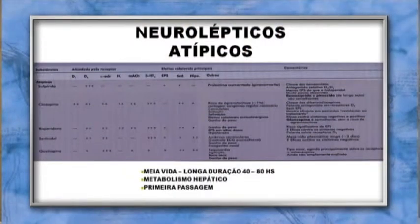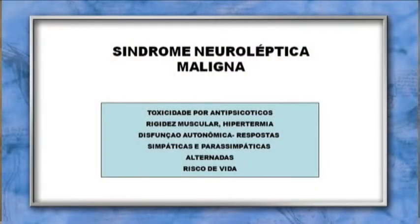Os neurolépticos atípicos (sintéticos) como risperidona e sulpirida também agem sobre um grande número de receptores, têm meia-vida longa (40 a 80 horas) e sofrem metabolismo hepático com metabolismo de primeira passagem. A importância de conhecer os neurolépticos na anestesia está no risco de induzirem a síndrome neuroléptica maligna, causada pela toxicidade dos antipsicóticos. Caracteriza-se por rigidez muscular, hipertermia, disfunção autonômica (alternando respostas simpáticas e parassimpáticas), representando risco de vida para o paciente.